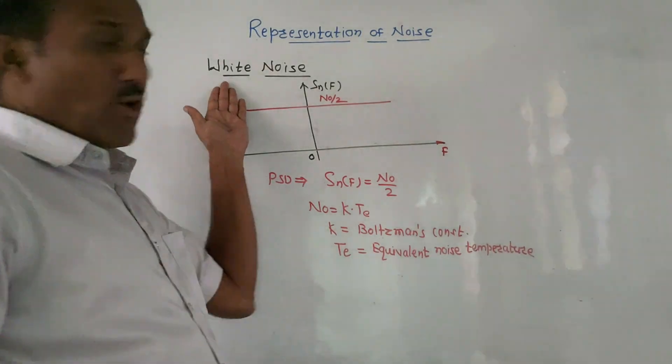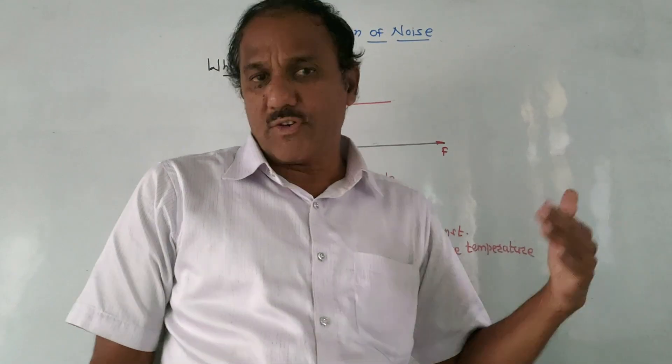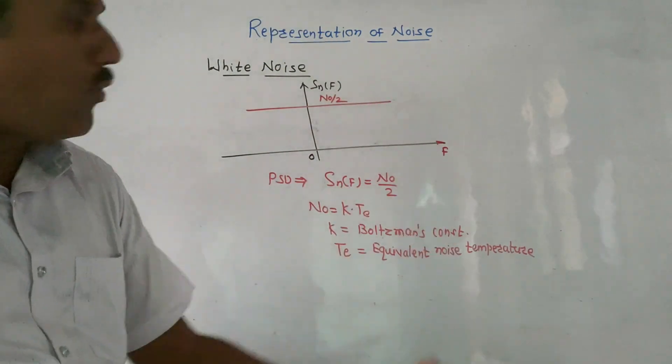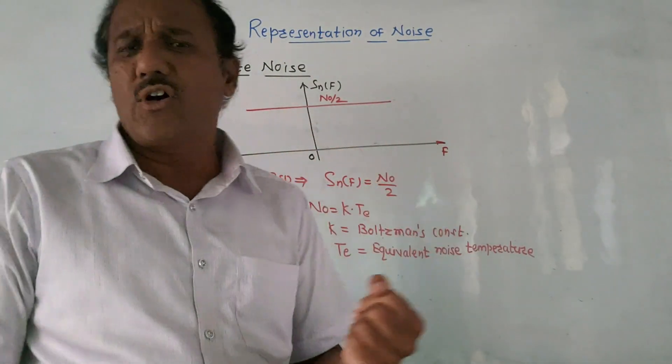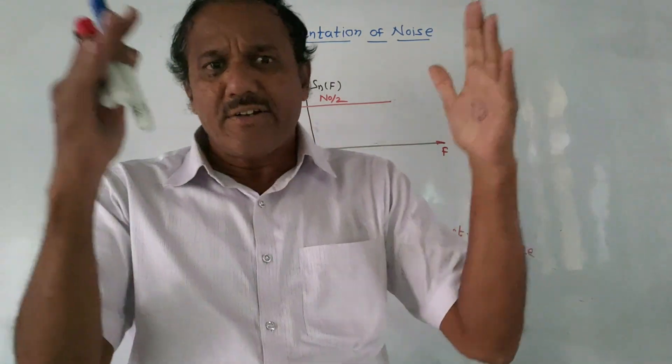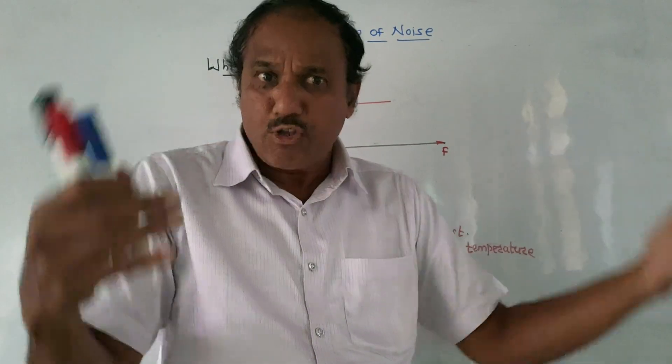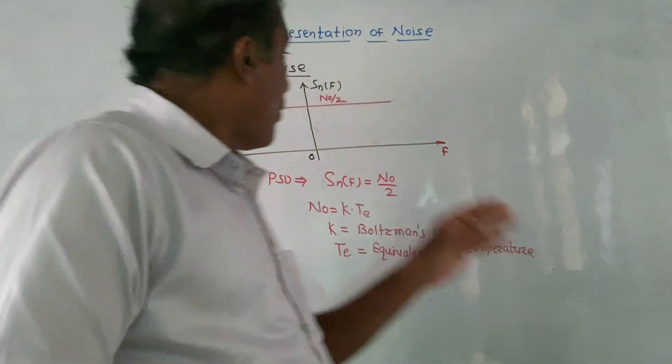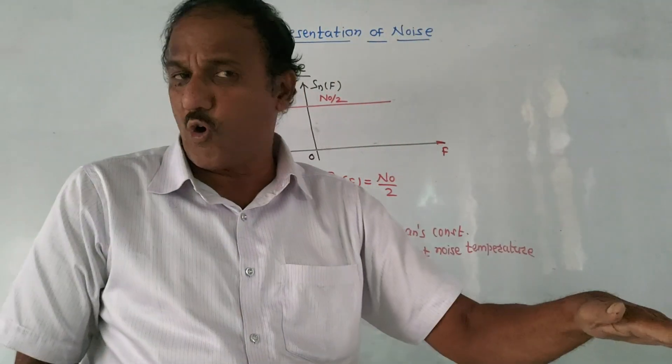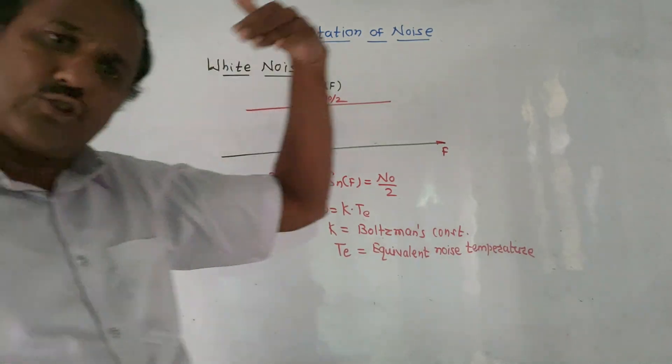Now let us talk about white noise. From exam point of view, it's a related question expected - describe the concept of white noise or what is white noise. It is expected for three or four marks. Same as white color - white color is superimposition, combination of all types of colors.